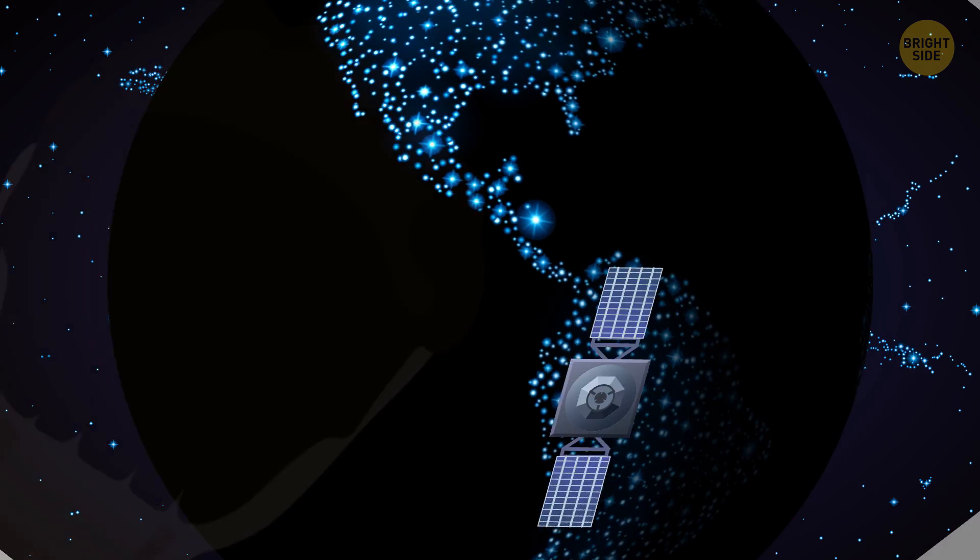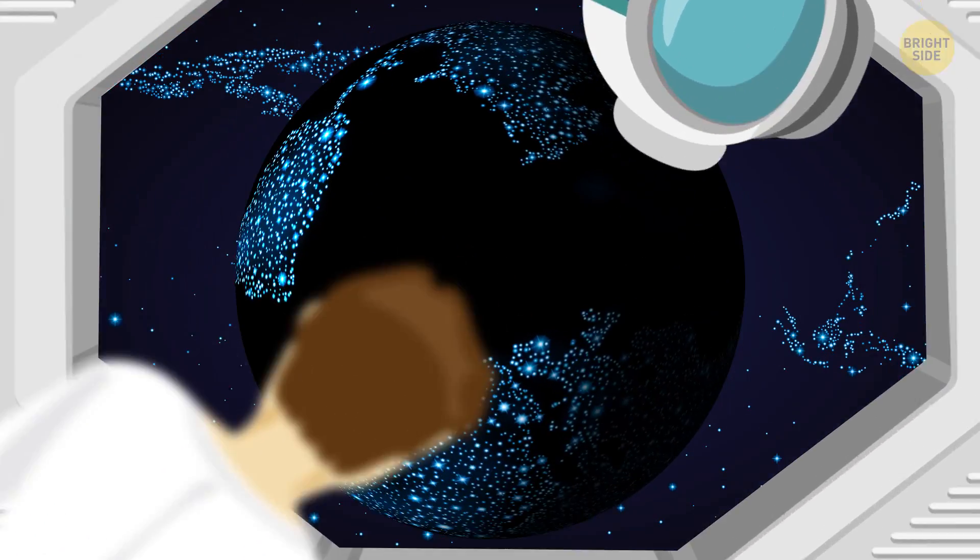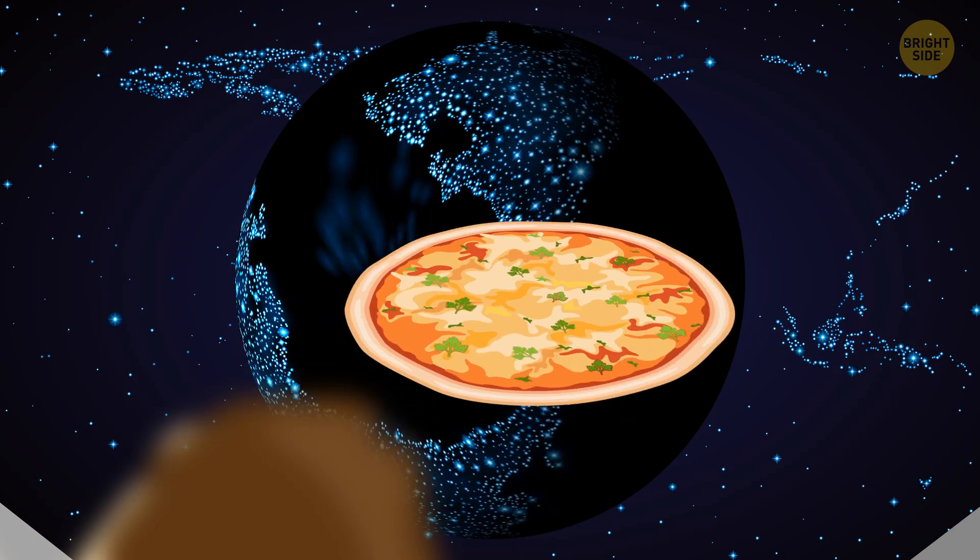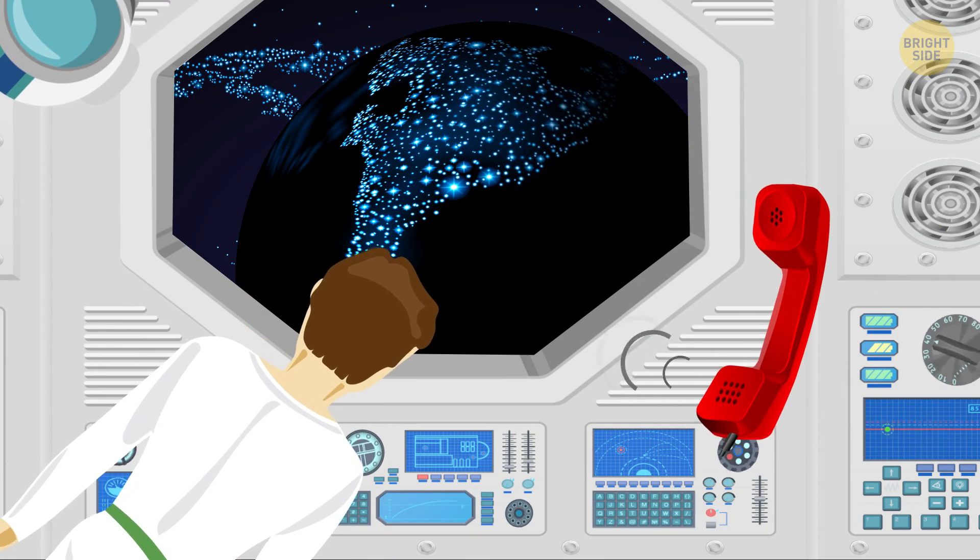Imagine you're an astronaut on the International Space Station, looking out the window, and you're craving a pepperoni pizza. Let's say it's possible to order delivery. What would that bill look like?